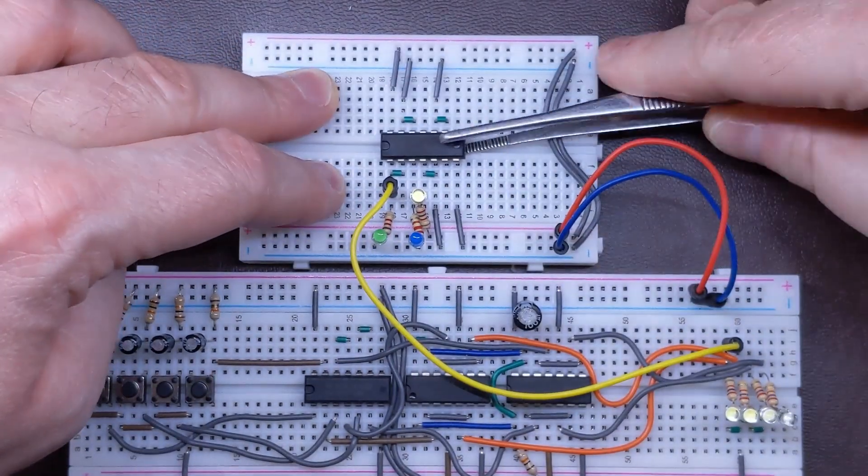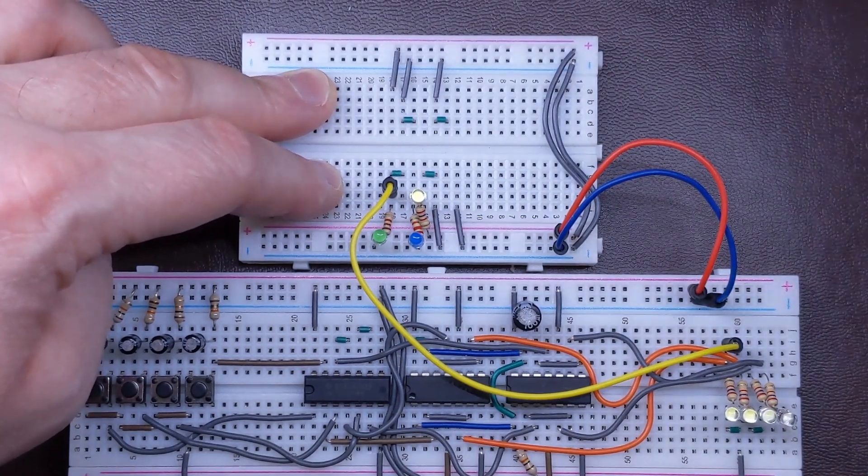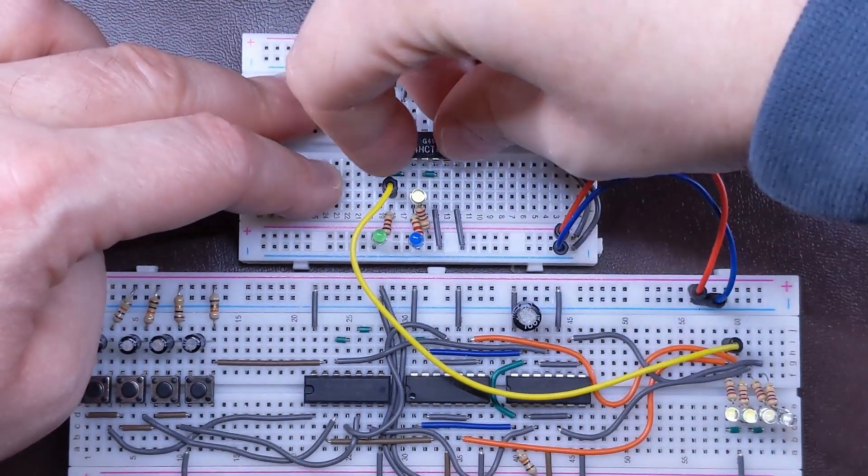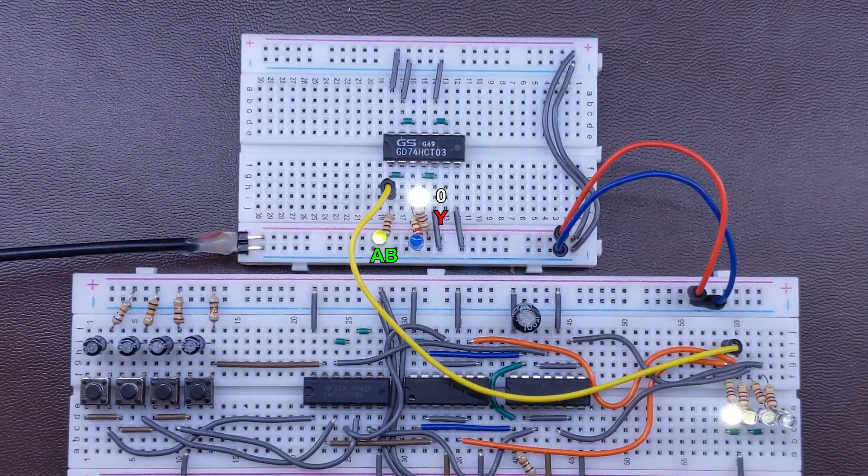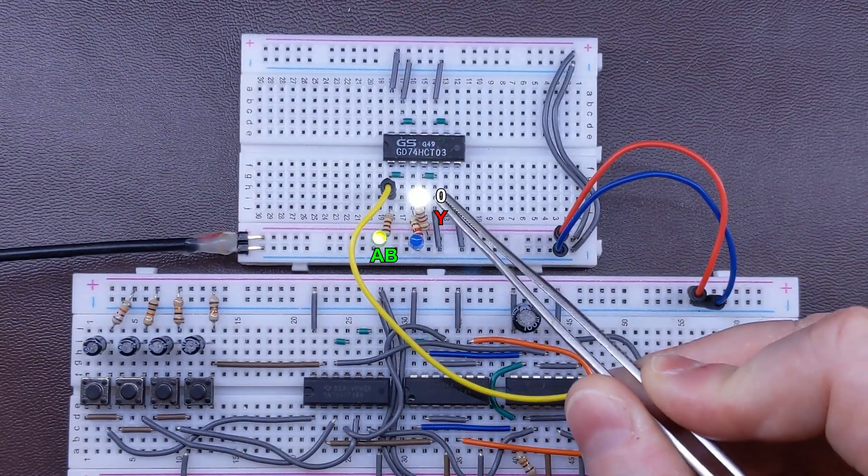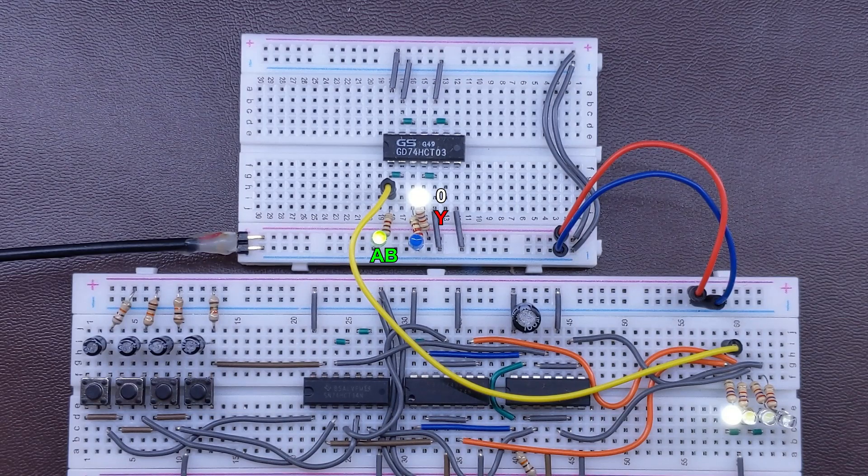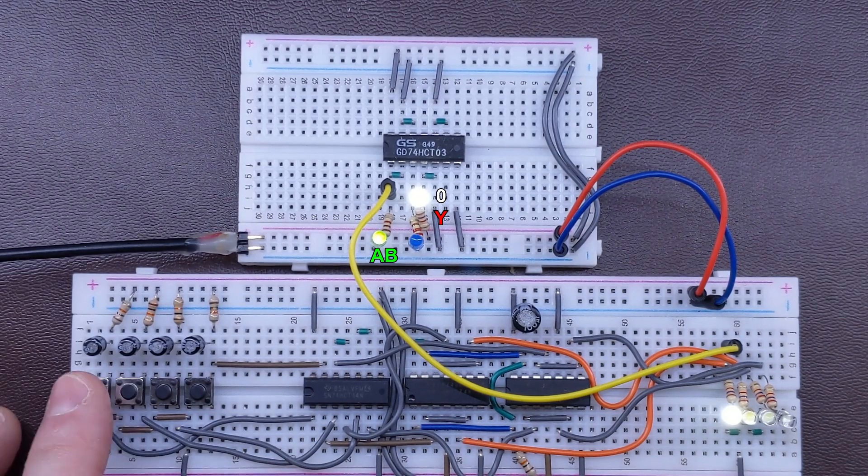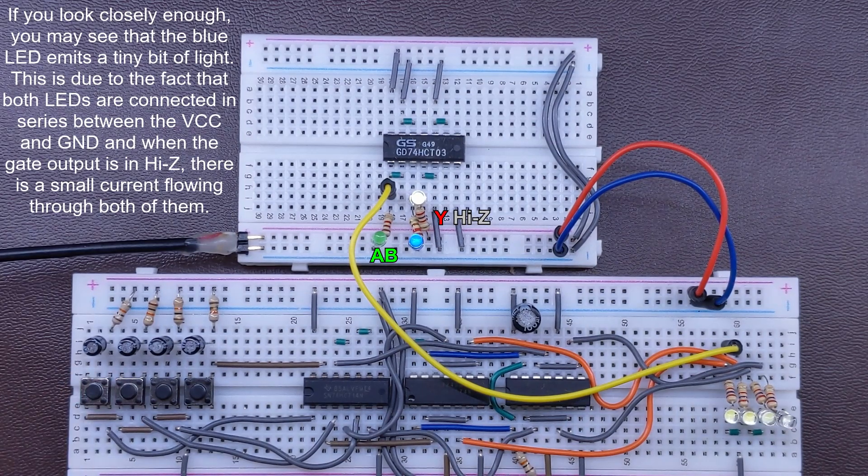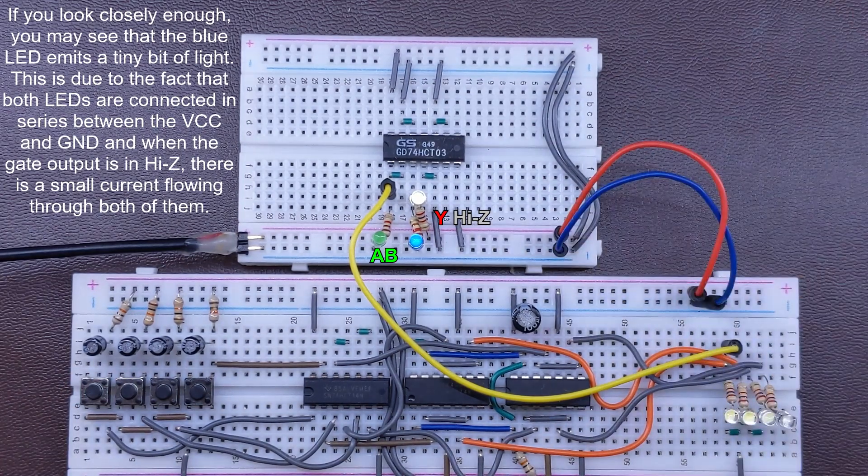OK, so now let's swap this 7400 with a pin-compatible 7403, which contains four NAND gates as well. As you can see, when we apply 1 on the inputs, the white LED is on, which shows that we have a logical 0 on the output. Let's now switch the input state to 0. Look at that! Neither of the LEDs is on,